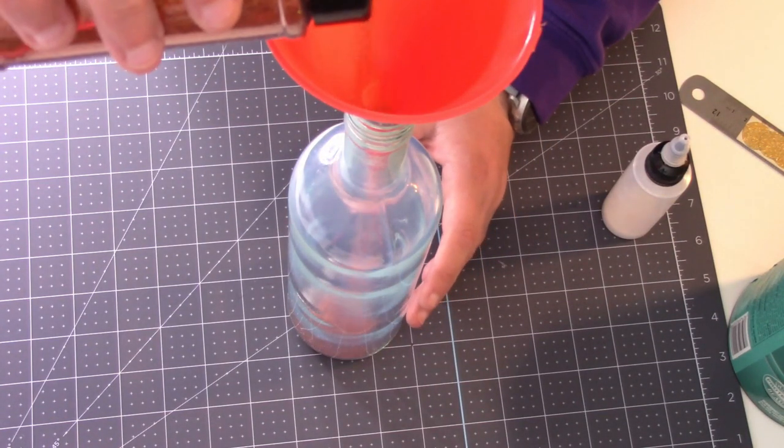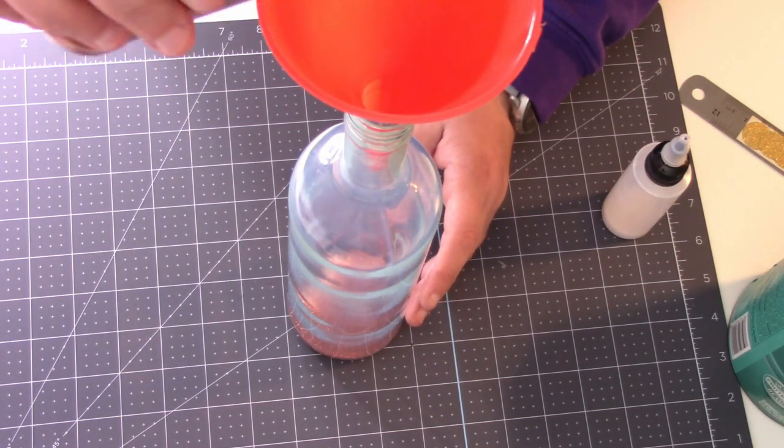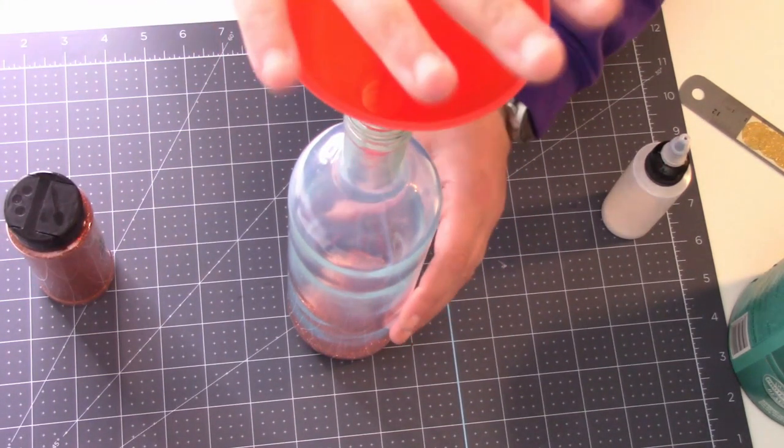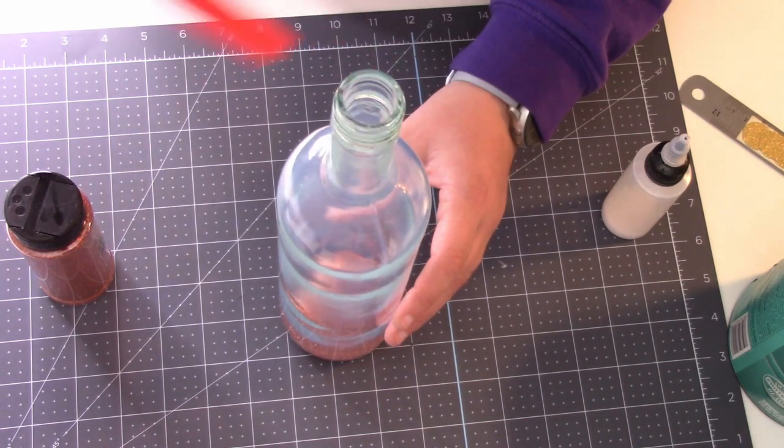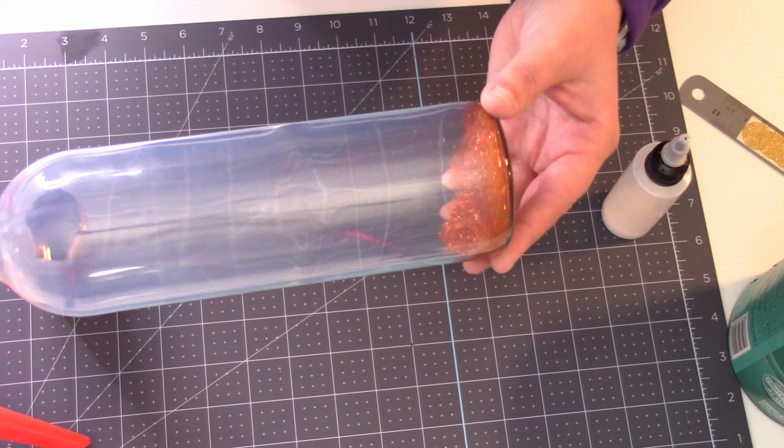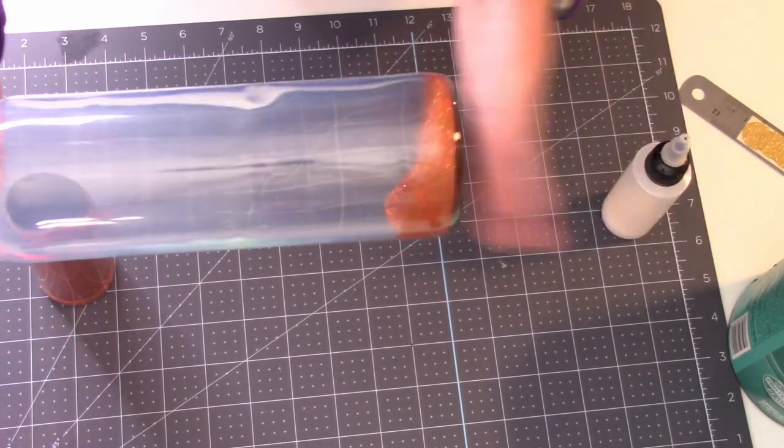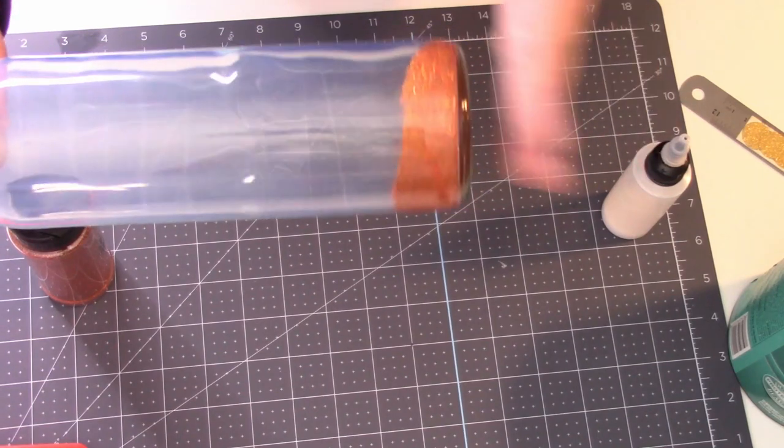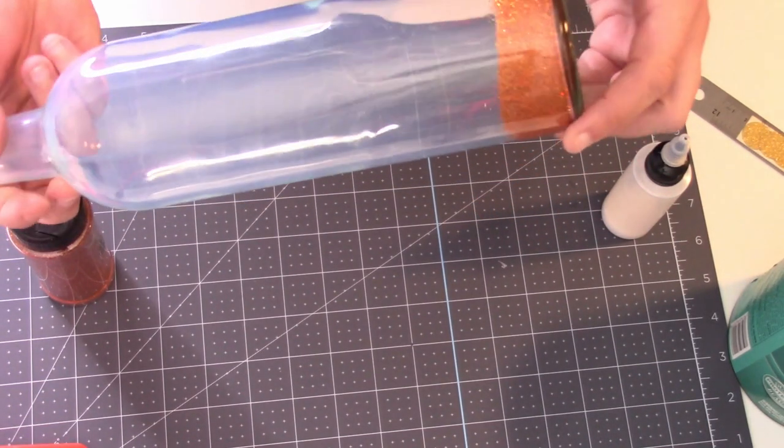So what we're going to do is put our funnel in the top and pour some glitter in. I don't like to pour a ton in at first. I just pour a little bit and you can always add more glitter as you need to. Then I just tap the top of my funnel to make sure any of the glitter that might be stuck in the funnel is out. Just like when you did the polycrylic, you're going to do the glitter the same way. I like to tap a little bit as I go.